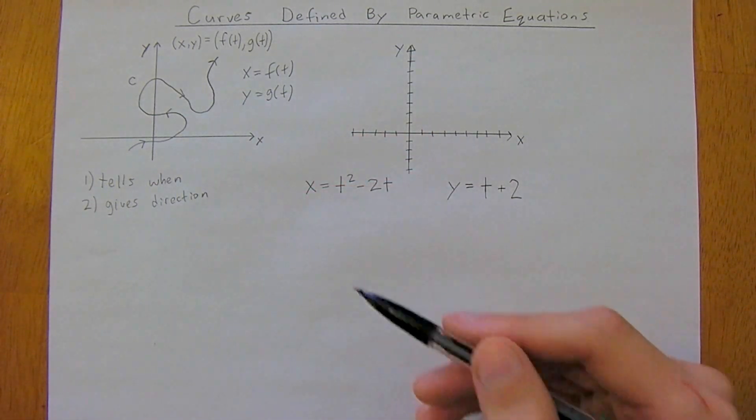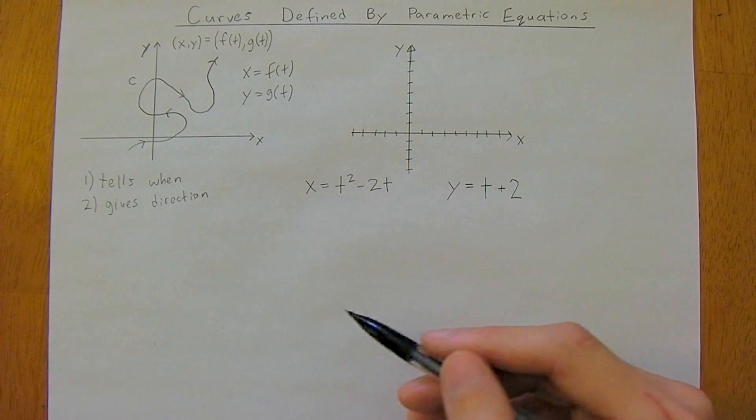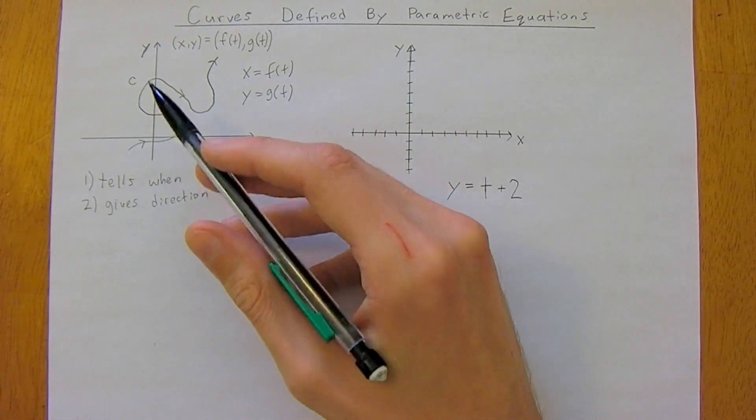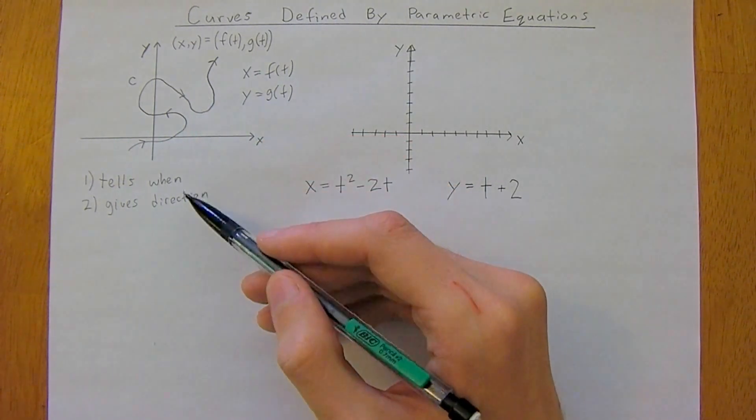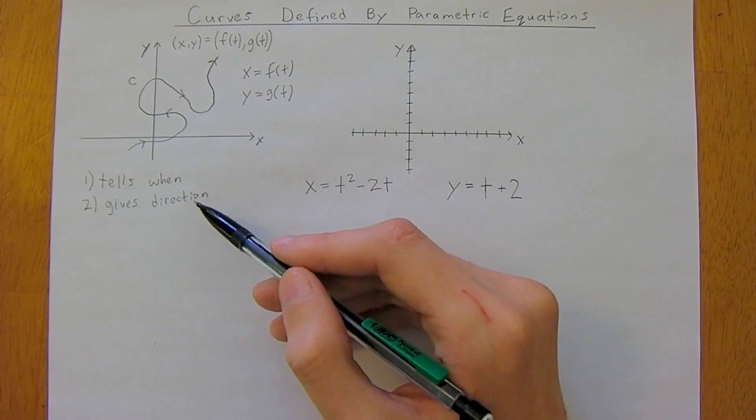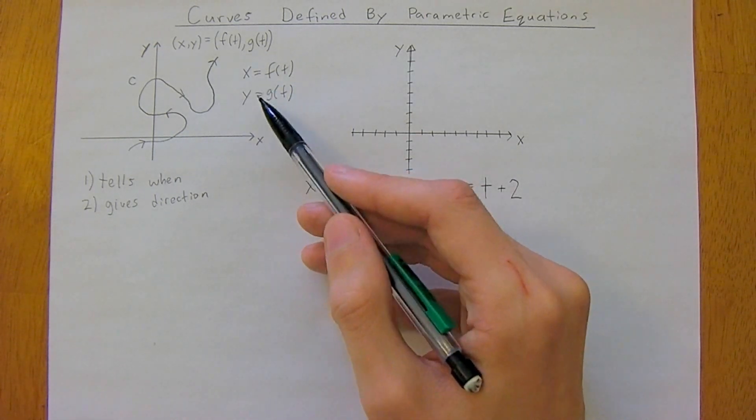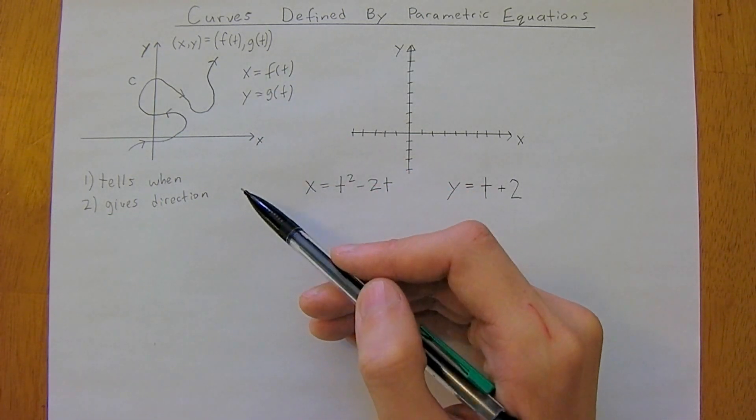At each value of t, this determines a point on the x-y curve. We can plot this using the coordinate plane. As t varies, the point we get for x and y will vary as well.